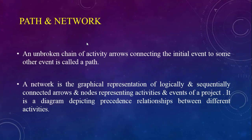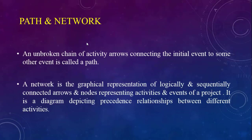A path is an unbroken chain of activity arrows connecting the initial event to some other event. A network is a graphical representation of logically and sequentially connected arrows and nodes representing activities and events of a project — it is a diagrammatic representation. Difficulties include securing realistic time estimates. Planning and implementation of a network requires trained staff; it is not a task for a layman. Developing a clear and logical network is also somewhat troublesome.